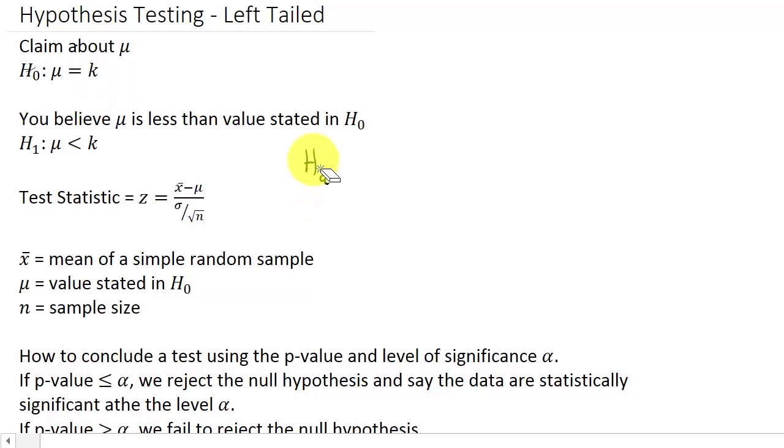So what we're claiming is that mu is less than k, mu is less than what's stated in the null hypothesis. Basically what it would look like for a left-tailed test—we have a normal distribution and our p-value is to the left. This would be the p-value, the area under the curve to the left of our z value, our test statistic here.